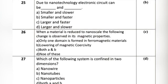Question 1: Due to nanotechnology, electronic circuits can be — Option A: smaller and slower. Option B: smaller and faster. Option C: larger and faster. Option D: larger and slower. The correct answer is Option B: smaller and faster.